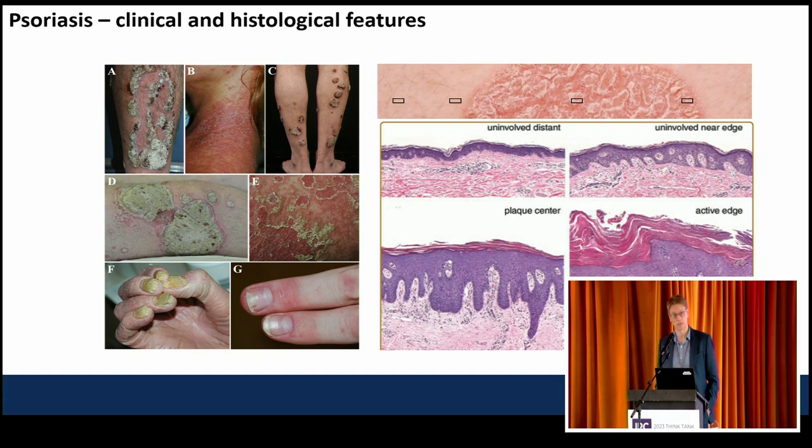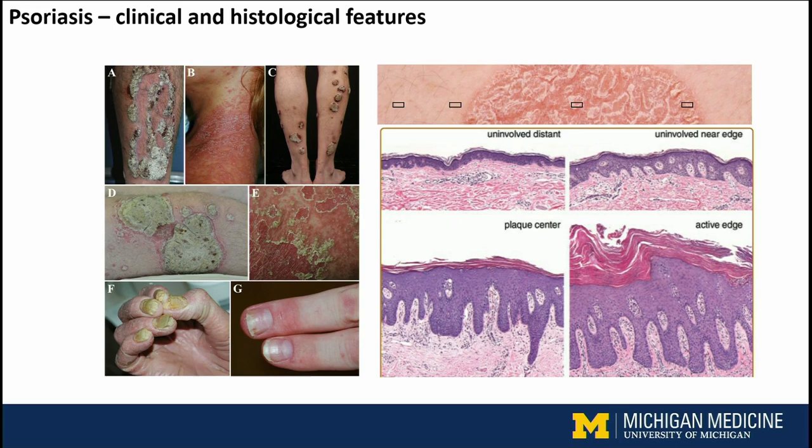Histologically, it's informative to see what's happening on the histological scale. This kind of tracks the lesional development from uninvolved distant skin, the near edge of psoriasis, and then the lesional edge of psoriasis and the plaque center. Typically with psoriasis, it tends to be more active on the edges, and that's where you get more of that epidermal hyperplasia and more inflammatory infiltrate.